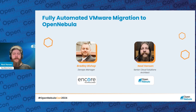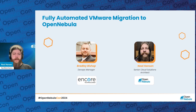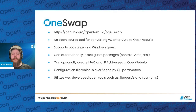Hello and welcome to this talk about fully automated VMware migration to OpenNebula. My name is Neil Hansen. I am a senior cloud solutions architect here at OpenNebula. I've got roughly 10 years of experience in the cloud architecture field, and I'm here to talk to you about a tool that we've been working on over the past couple of months called OneSwap — a tool that provides automatic migrations from VMware over to OpenNebula.